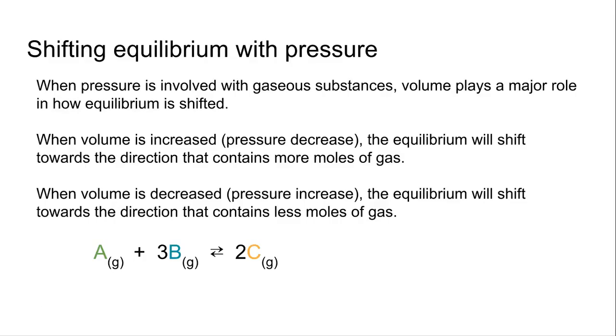Now let's look and see how many moles we have. On the reactant side, we have 4 moles. Notice we have 1 mole of A and 3 moles of B. And on the product side, we have 2 moles, just 2 moles of C there.